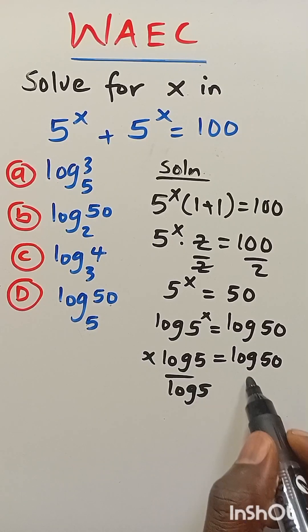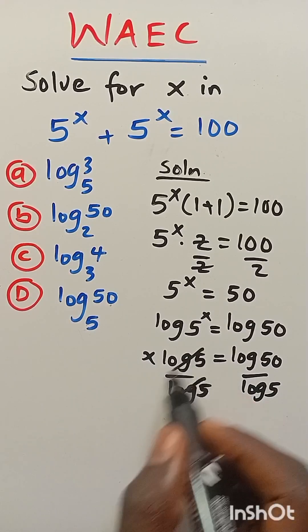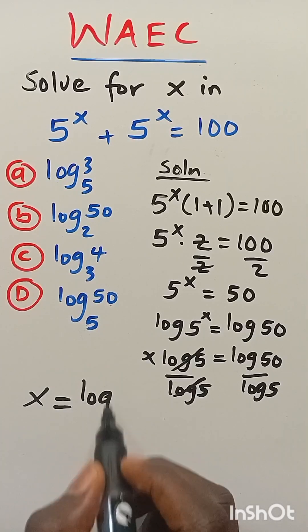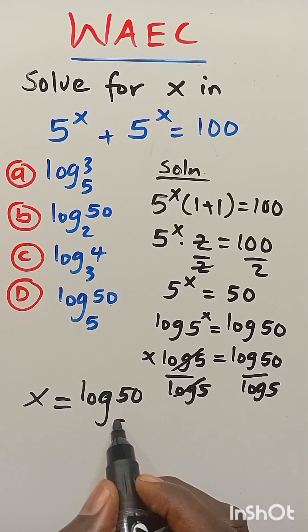log 5 will cancel. So we have x equals log 50 divided by log 5.